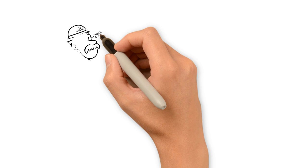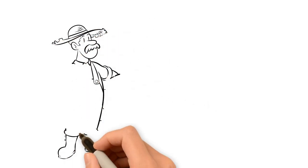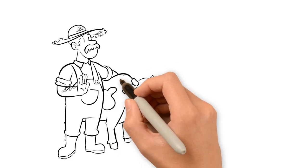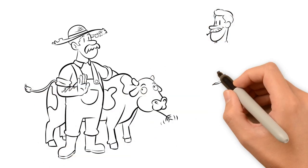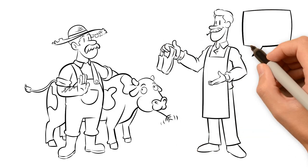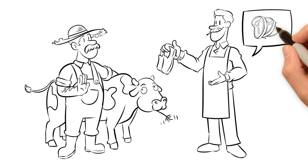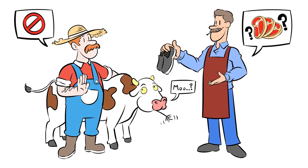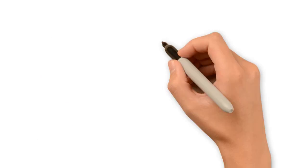A barter system has two basic problems: indivisibility and lack of coincidence of wants. Imagine that a farmer wants to buy a pair of shoes, but the cobbler does not want eggs. He may want beef, but the farmer is not willing to slaughter his cow for shoes. A trade where both are happy is now difficult. Any sort of advanced economy is impossible with simple direct exchange.